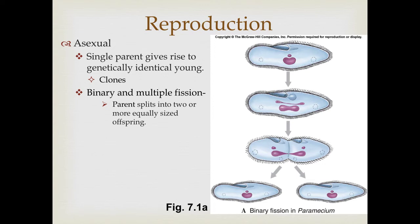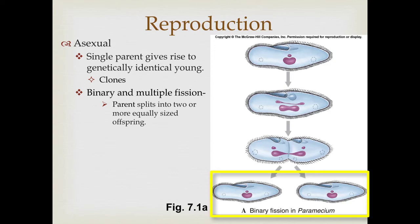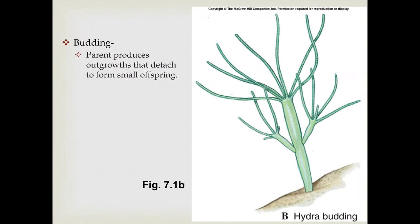One method is binary and multiple fission, which we'll discuss when we cover protozoans. In binary fission, the parent splits in two, and in multiple fission, they split into more than two individuals that become the offspring. There is no parent left — the parent splits into two or more offspring of roughly equal size.